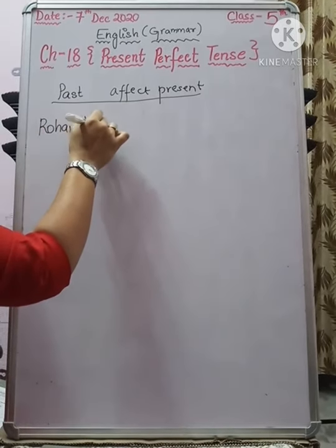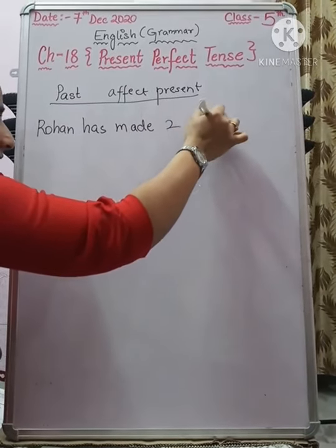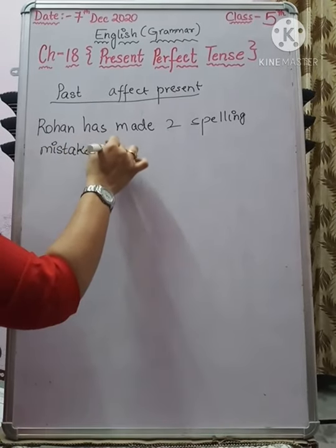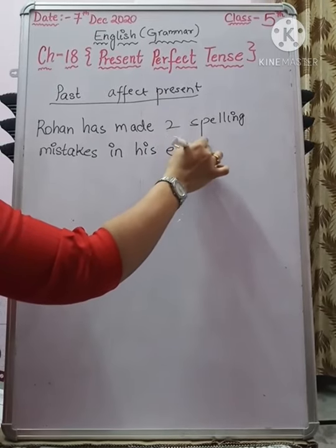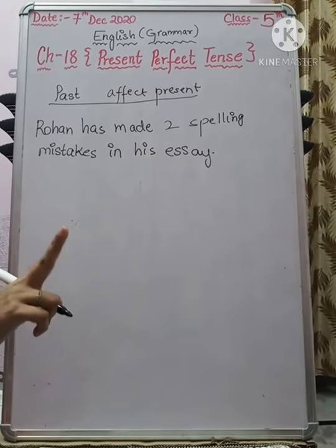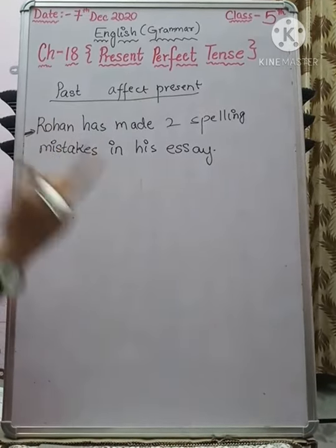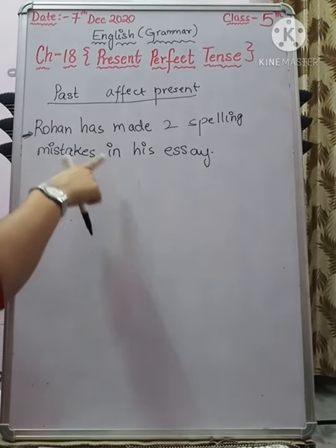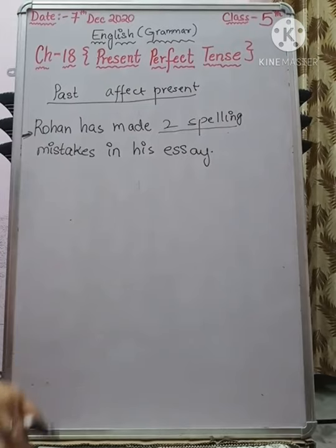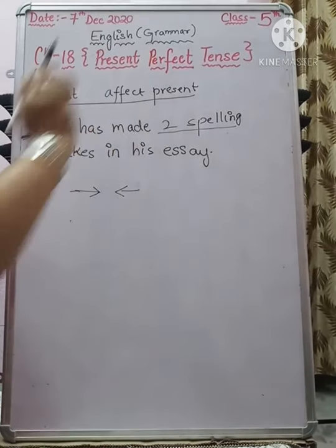Here is an example sentence: 'Rohan has made two spelling mistakes in his essay.' Rohan started writing this essay — that is a past activity. When he checked the essay, two spelling mistakes came out. He started writing in the past, and when he checked, the result appeared in the present. So the past and the present are both connected. This kind of work is present perfect tense.